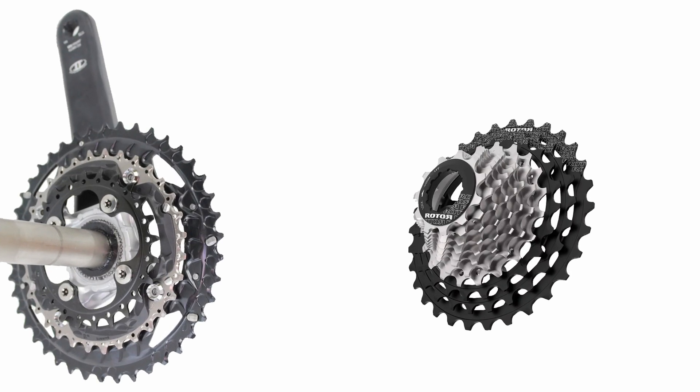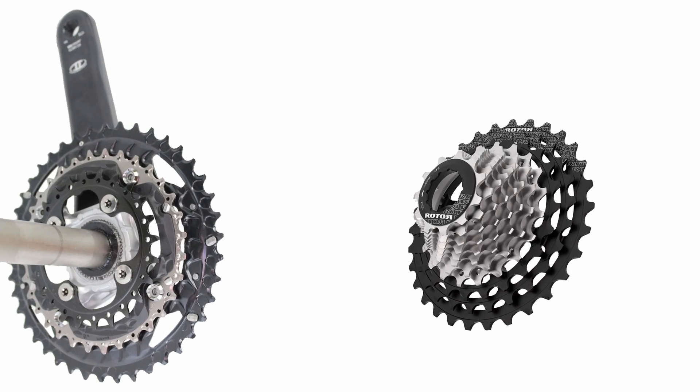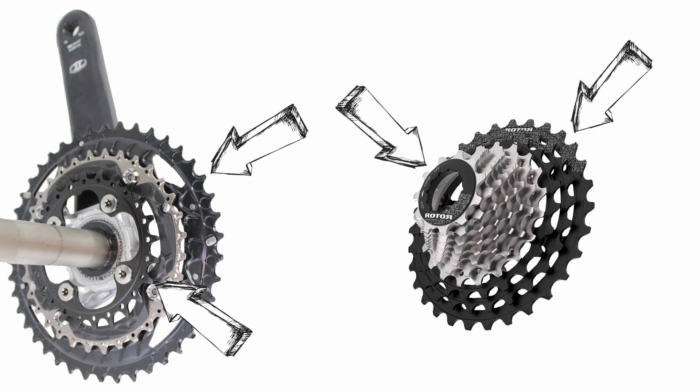Maximum drivetrain capacity refers to the amount of chain slack a derailleur can manage, determined by the number of teeth in a drivetrain. It's calculated by adding the difference in teeth between the smallest and largest chainrings to the difference in teeth between the smallest and largest cogs on the cassette.